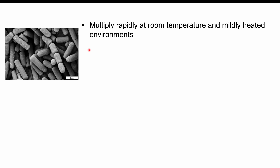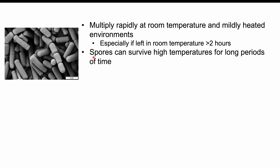Bacillus cereus can multiply rapidly at room temperature and even in mildly heated environments. If food is left out at room temperature with any bacteria or spores present, it can rapidly multiply, especially if left for greater than two hours. The spores the bacteria produces can survive high temperatures for long periods of time, and the bacteria can be found in both soil and food products.